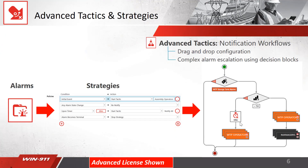Let's compare that to our advanced tactics and strategies — this is only available on the advanced license. The same process applies where alarms trigger a strategy which triggers a tactic, but now the features in the configuration are different. Now you can do things based upon a repeating timer, state change, and you have more options for the policies of actions you want to put in place. Those strategies will still point to a tactic. Now a tactic, instead of having a straight down the list configuration, has a flowchart type of configuration you can drag and drop. You can do advanced escalation based on time of day, labels, severity, timers, and call out different groups of people.